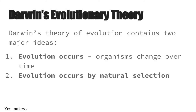Two parts of Darwin's evolutionary theory: the first one — evolution occurs. That's it. Organisms just change over time, very slowly. And the second is that evolution occurs by natural selection. What is natural selection? Well, let's look into Darwin's voyage and how these two ideas came about.